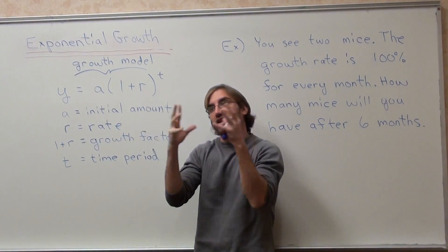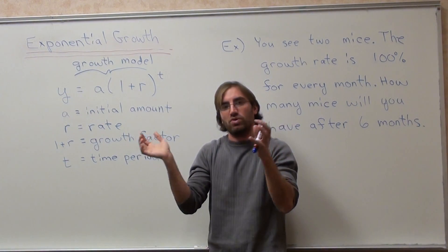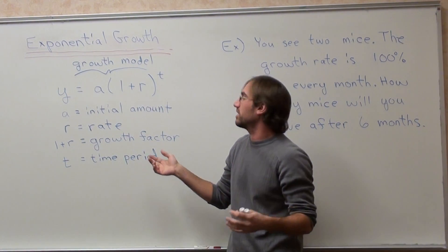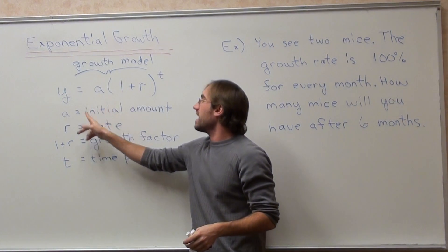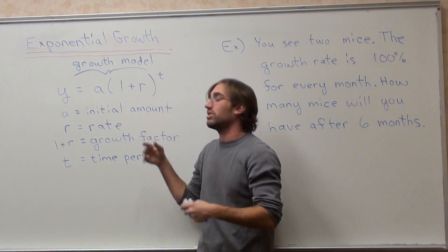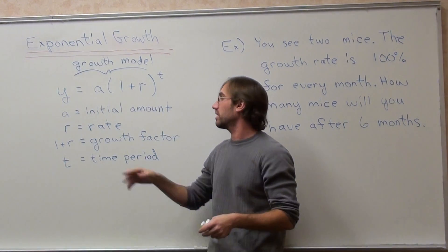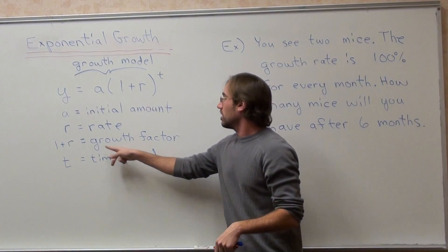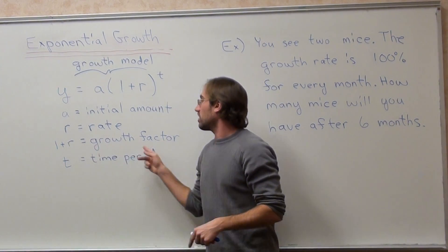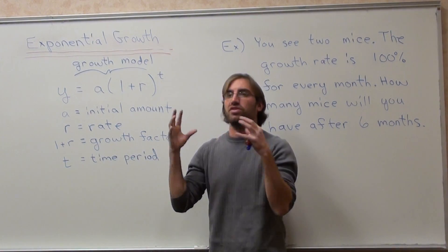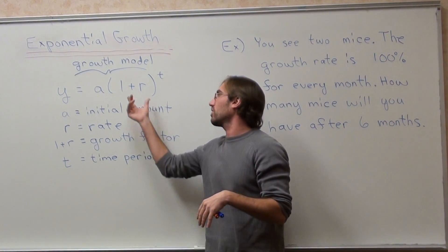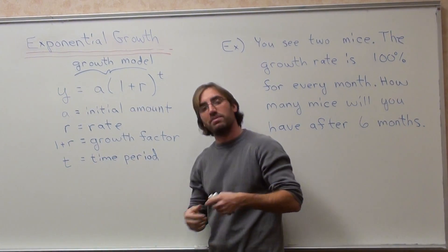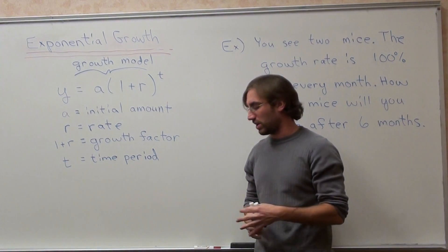This whole thing is called the growth model. Y is whatever the answer is — what it equals over a specific period of time. A is the initial amount you start with. R is the rate that something grows at. One plus R is called the growth factor, and T is the time period we're working with.